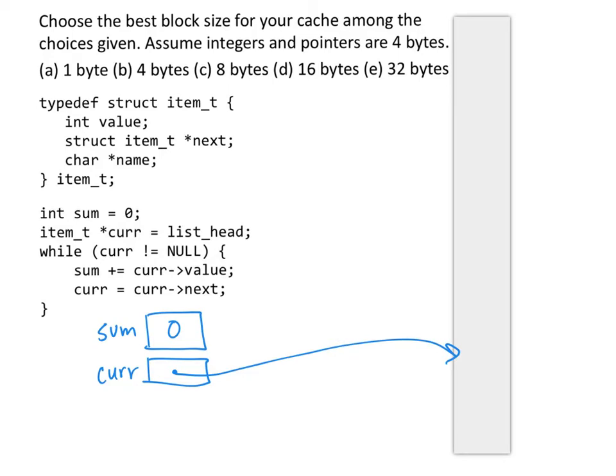So we can assume that somewhere in memory there is a linked list. The head of the list is located in memory here, and we can assume that we have a value here.